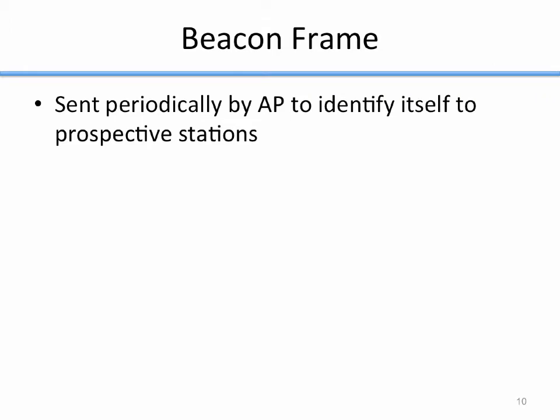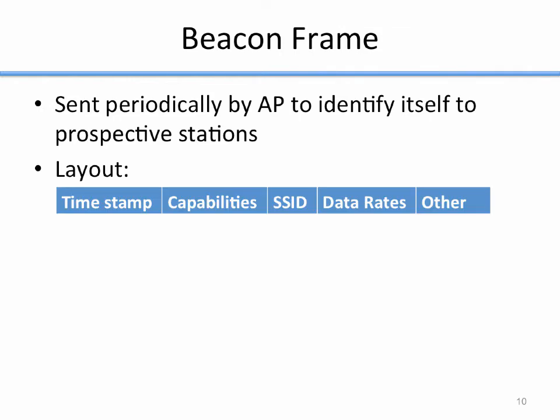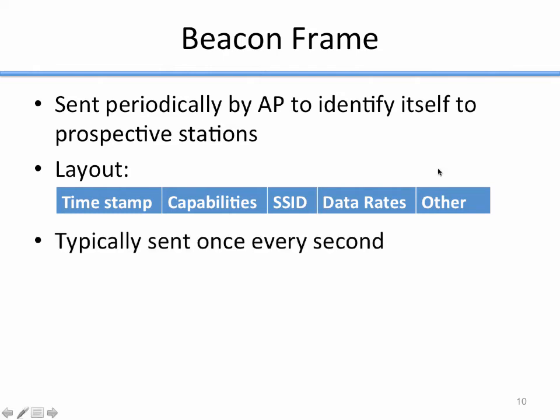The first type of control frame is a beacon frame, sent periodically by the access point to identify itself to prospective stations. A beacon frame contains a timestamp, the capabilities of the access point (like security settings), the SSID, supported data rates, and other information. Typically an access point sends a beacon frame once every second. This is a convenience feature — when you click the wireless icon on your laptop, the list of networks shown is your wireless card listening for these beacon frames.